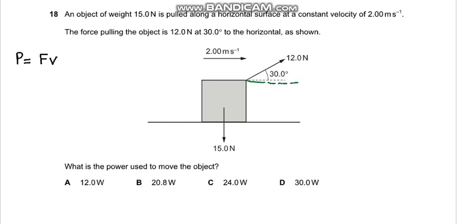So we can see that the component of force must be along the direction of velocity. So that must be 12 cos 30. So this will become power equals 12 cos 30 multiplied by the velocity which is 2. So the power becomes 20.8 watts. So B is the correct answer.